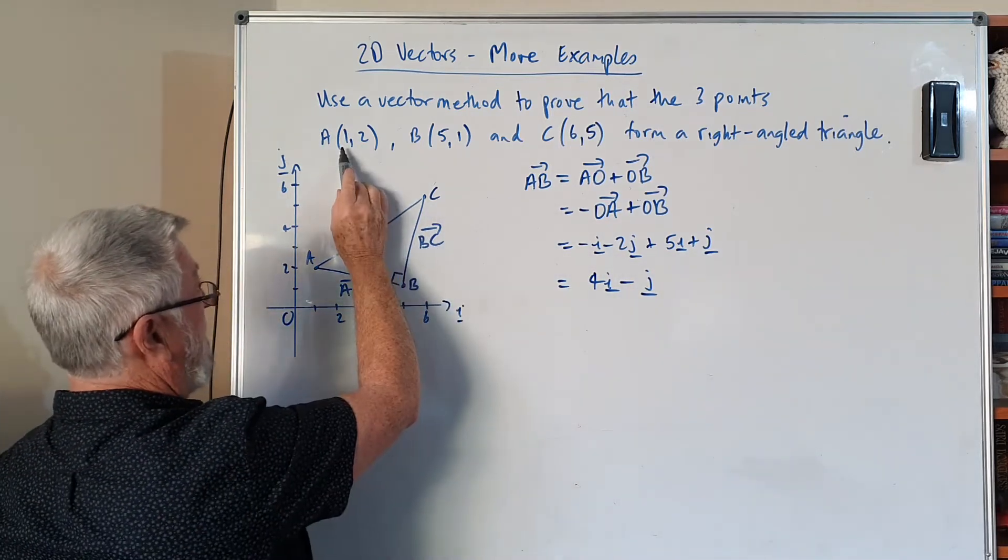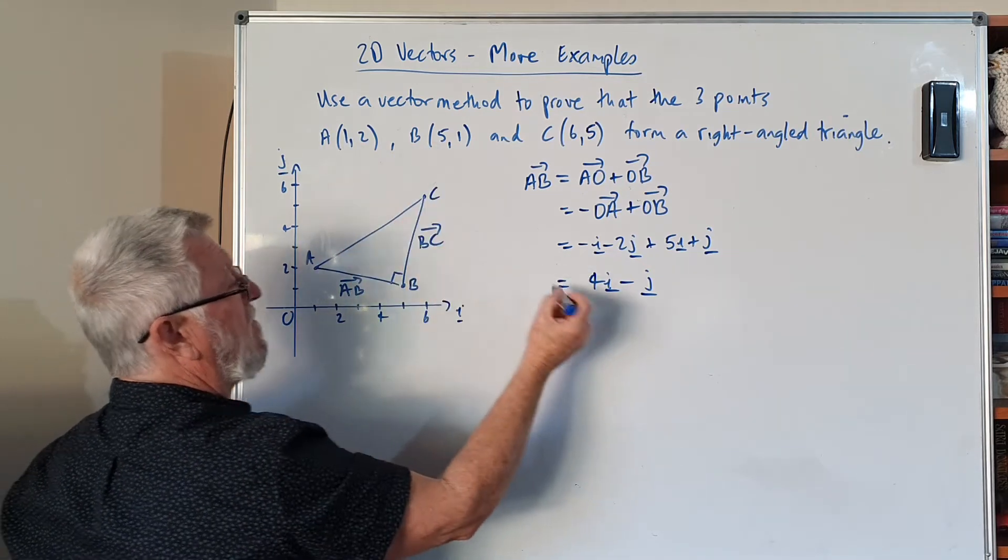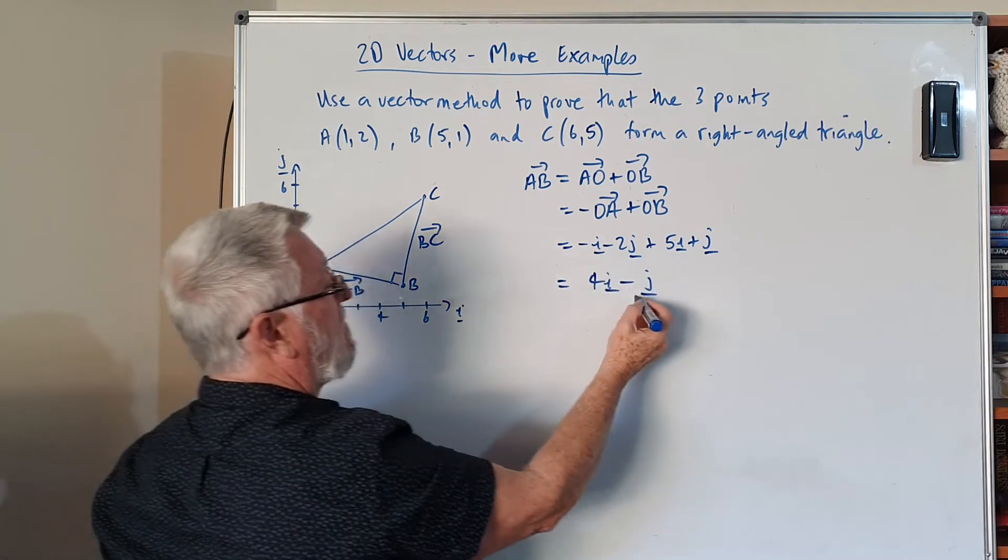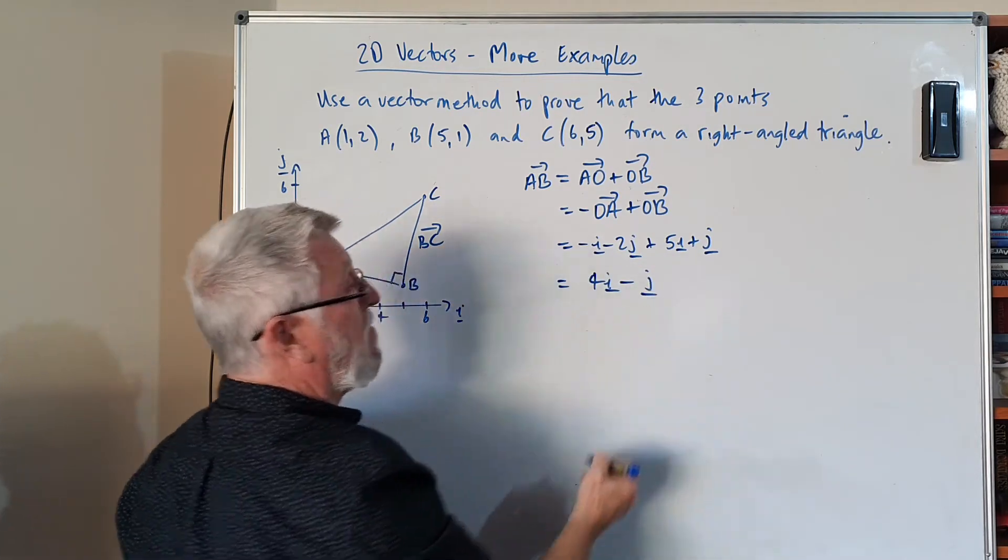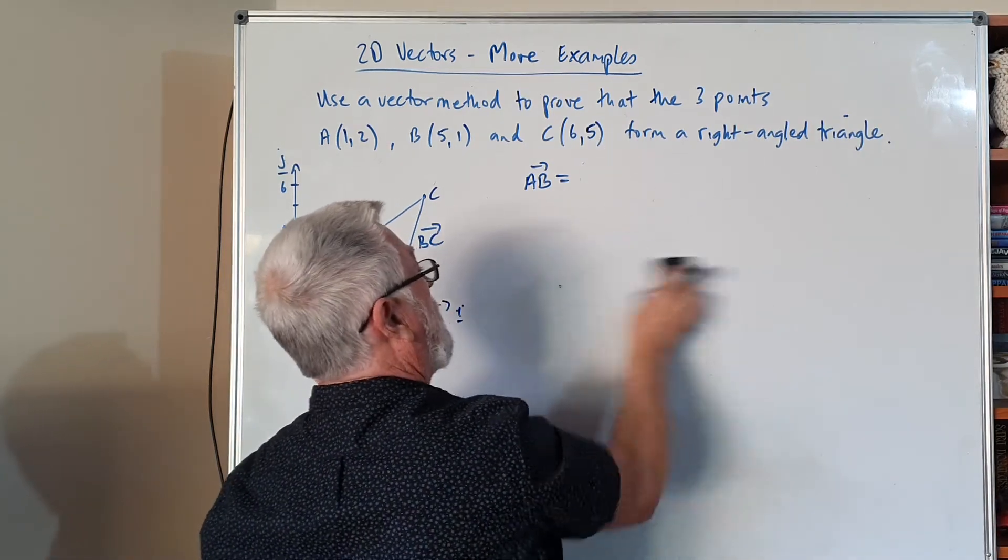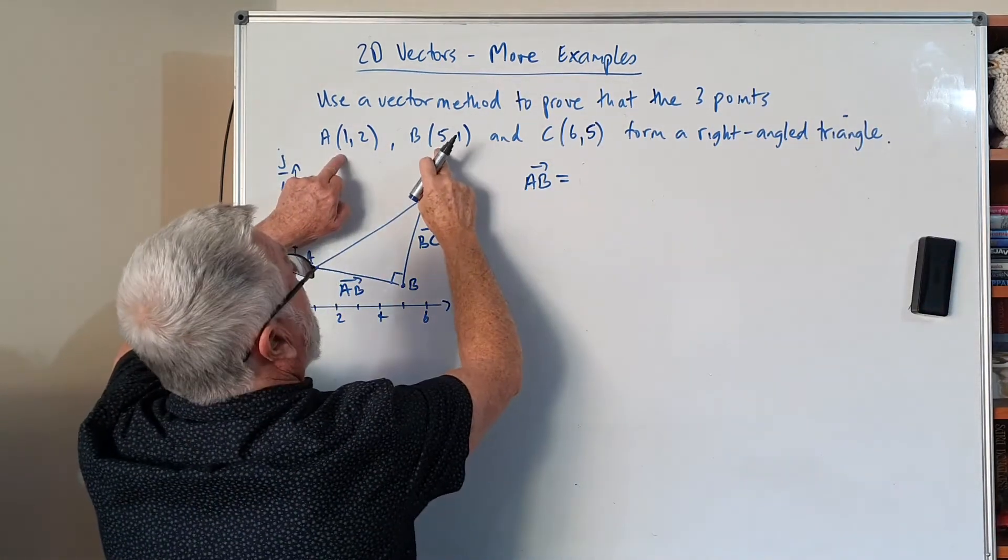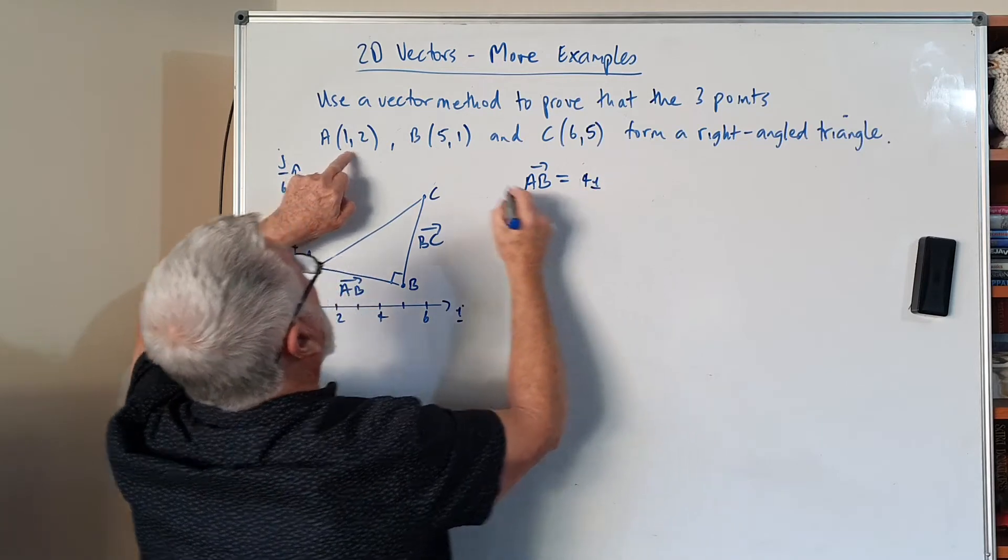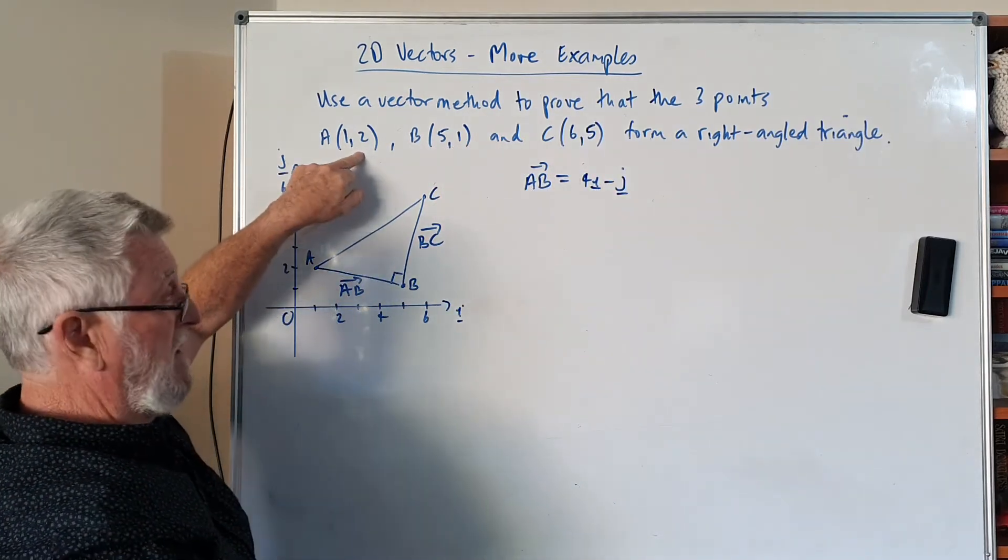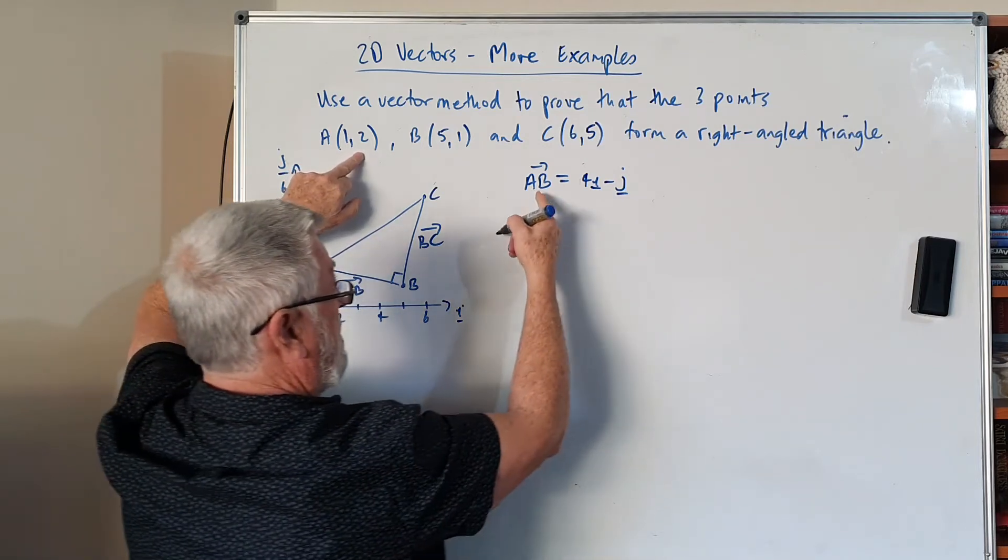Now here's what I prefer to do: instead of looking at all that, I just go how far is it from one to five? I've gone up four. How far is it from two to one? I've gone down one. So if that works for your brain, you can consider putting all this out. You can just look at it and go, what's happened? I've gone up four, so that's four i. I've gone down one, so that's minus j. And it does work in 3D and everything else you need it to work in.